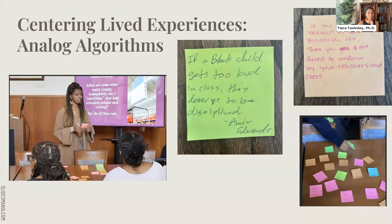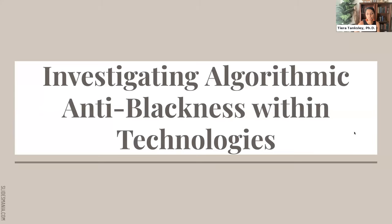After this introduction to algorithmic racial logics, students use if-then statements to describe algorithms they themselves have encountered in schools. For example: 'If a Black child gets too loud in class, then they deserve to be disciplined.' Or: 'If you do not present as your biological sex, then you are forced to conform by your teachers and peers.' We see how they're pulling on threads of algorithmic logics around race, gender, sex, and class.